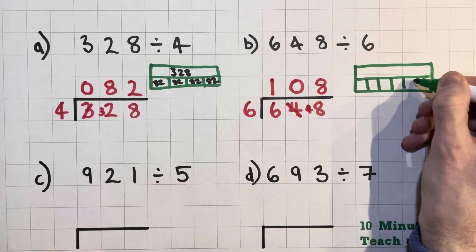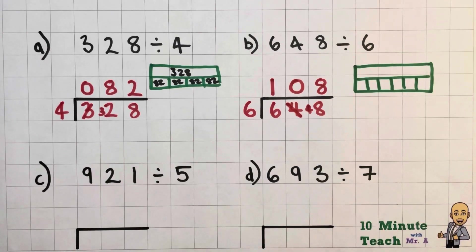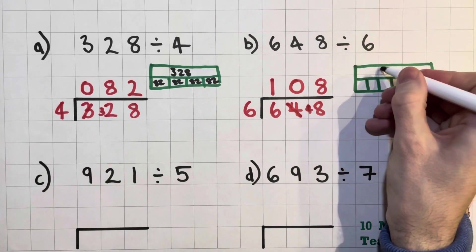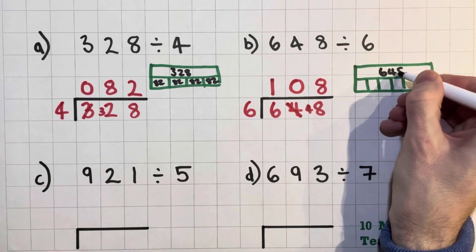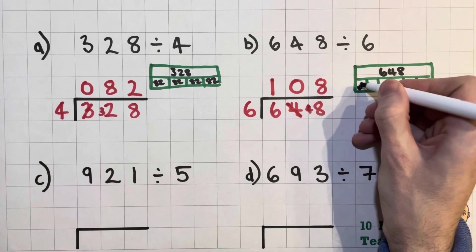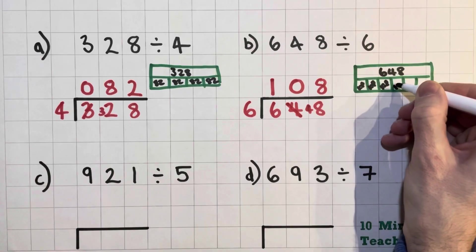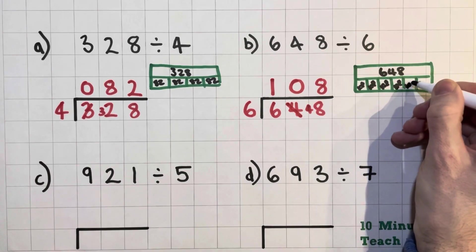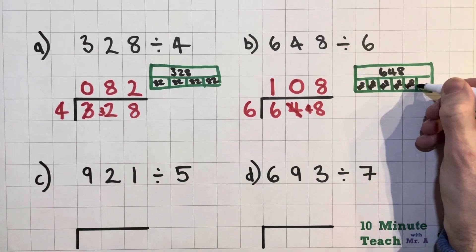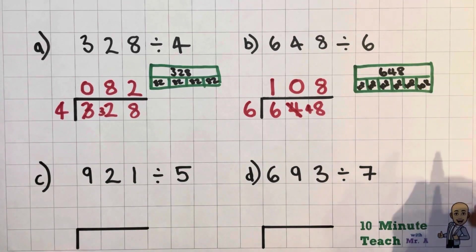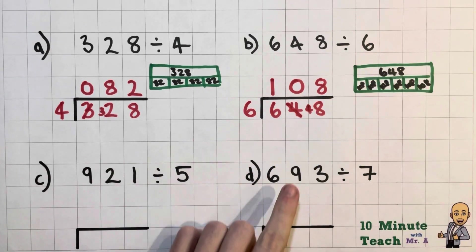There we are, that's perfect. So 648 and we've got 108, 108 times by 6 actually. So just like in the last example, if you multiplied 108 by 6 you would end up with 648. So all those numbers actually work together, you can use those to work out one on the other.